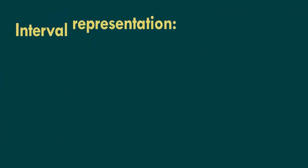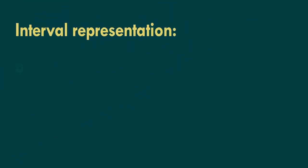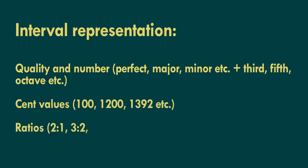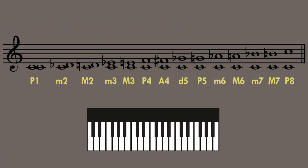There are three ways of representing intervals: using quality and number, cent values, and ratios. For instance, the major third is an interval name in which the term 'major' describes the quality of the interval and 'third' indicates its number.